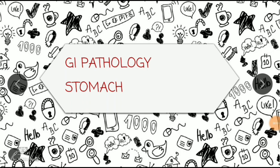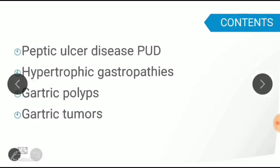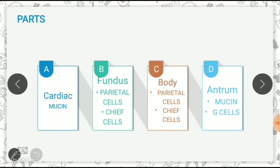This video covers stomach pathology. The stomach is part of the gastrointestinal system and consists of four parts: cardiac, fundus, body, and antrum. The cardiac region is at the gastroesophageal junction — there is no actual anatomical sphincter — and has mucus-secreting cells. The fundus and body have parietal cells and chief cells. The antrum and pylorus, the distal end of the stomach, have mucus-secreting cells and G cells.